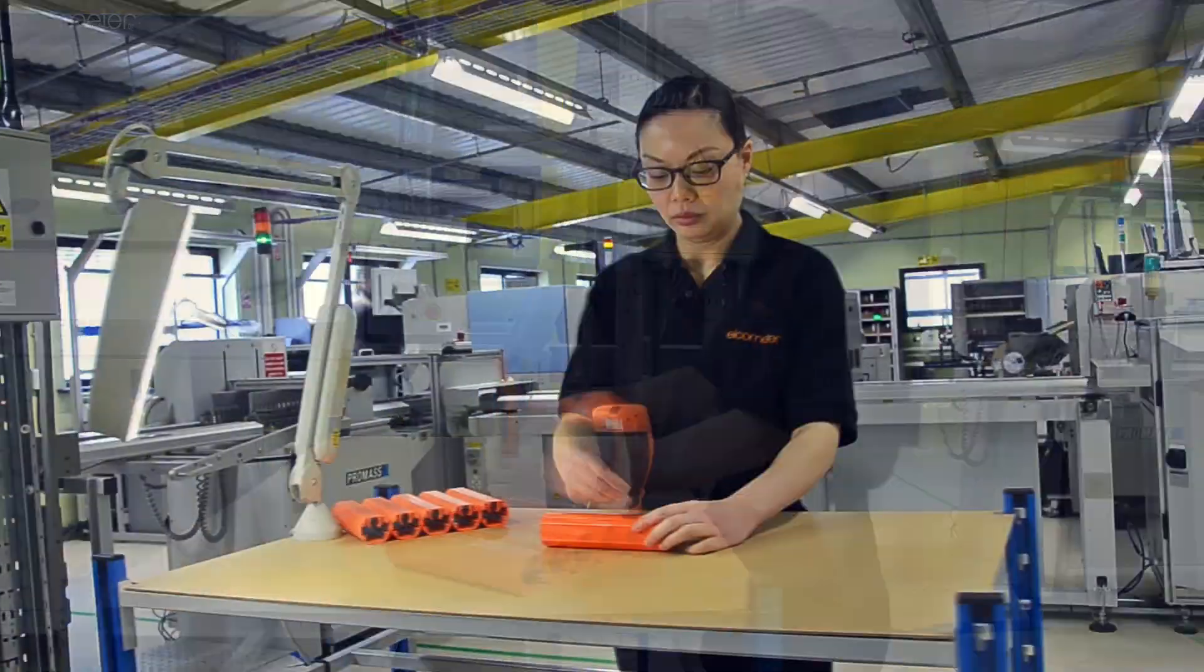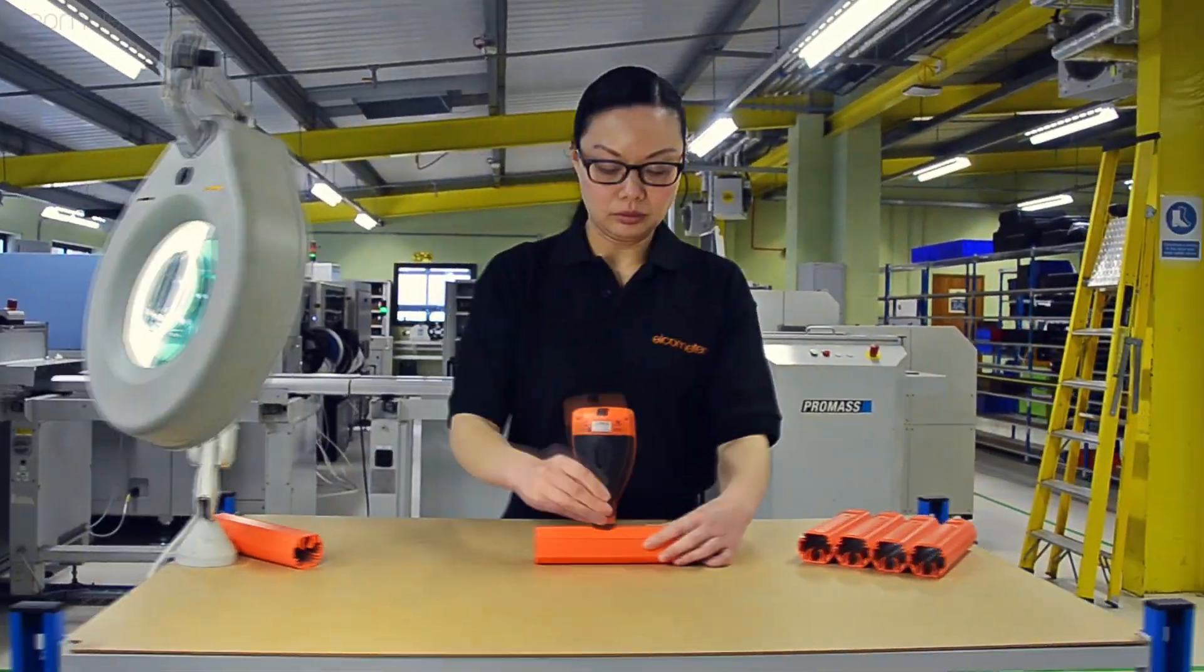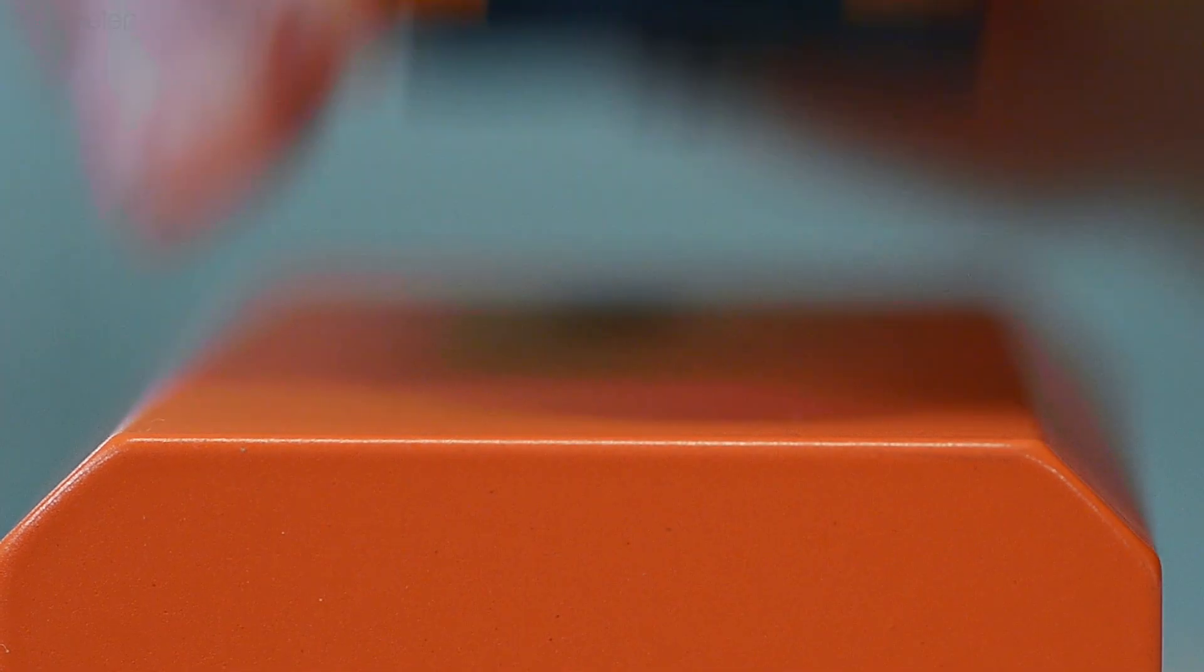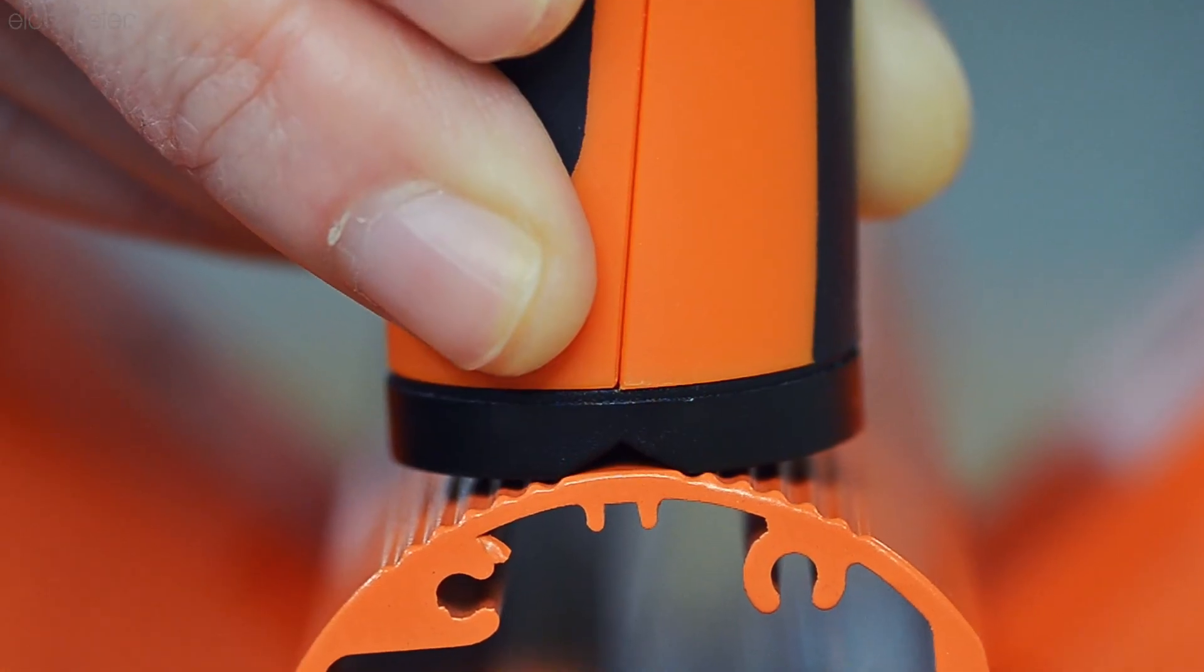Taking over 60 readings a minute, the Elcometer 415 comes with a built-in integral probe ideal for measuring paint thickness on flat or curved surfaces.